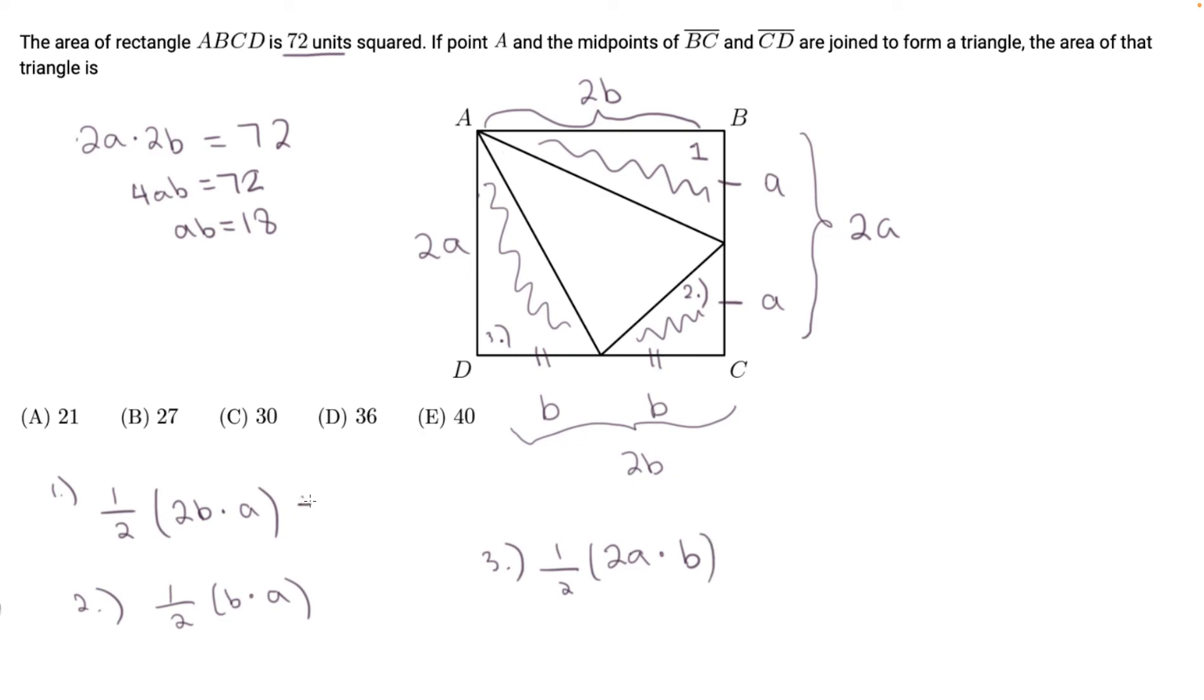If we simplify this, we get ab. And this is ab over 2. And this is ab. Then we found out from the above that ab is 18, so we can substitute ab as 18.